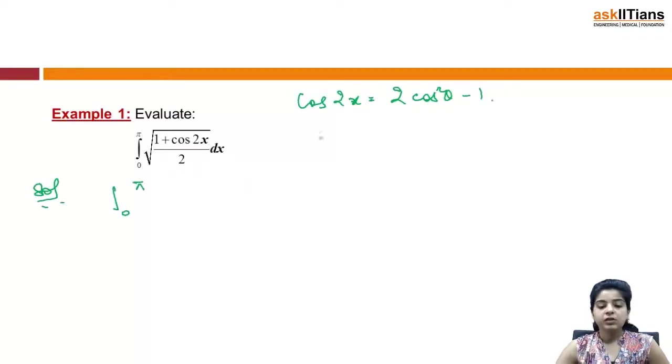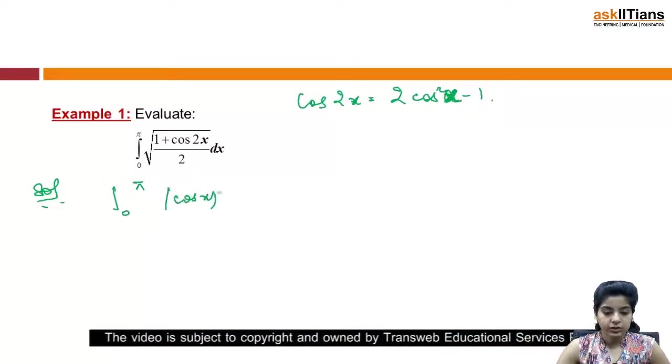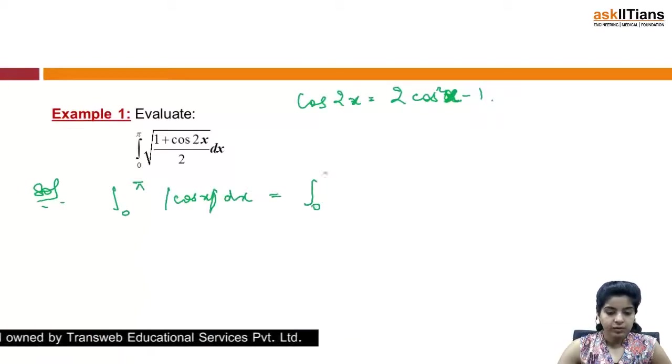So 1 plus cos 2x becomes 2 cos squared x. Then I have square root of (2 cos squared x)/2. The 2's get cancelled, so basically I am left with mod of cos x dx.